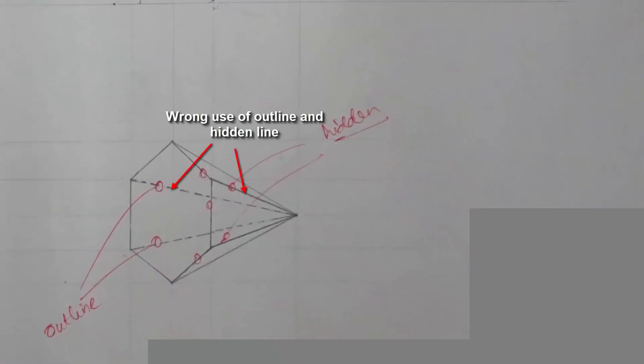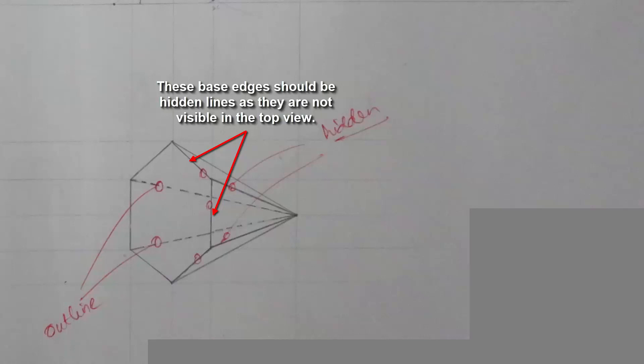This drawing, the wrong use of outline and hidden line. The dotted lines should be actually the solid lines. These base edges should be hidden lines as they are not visible in the top view.